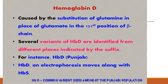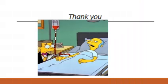Hemoglobin D is seen very commonly in Punjab and is known as hemoglobin D Punjab. Hemoglobin D on electrophoresis moves along with hemoglobin S. It is a common variant seen amongst the Punjabi population. Thank you.